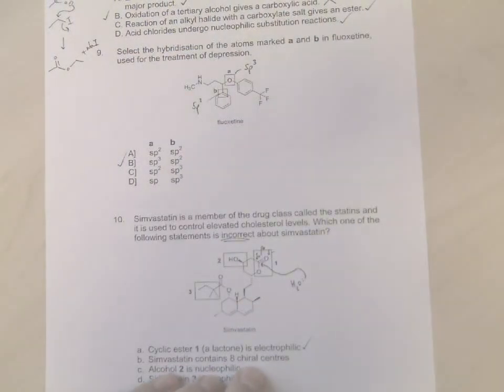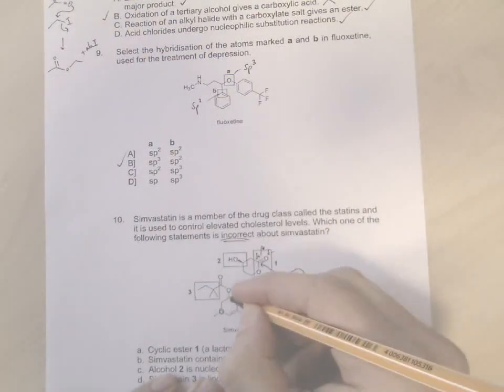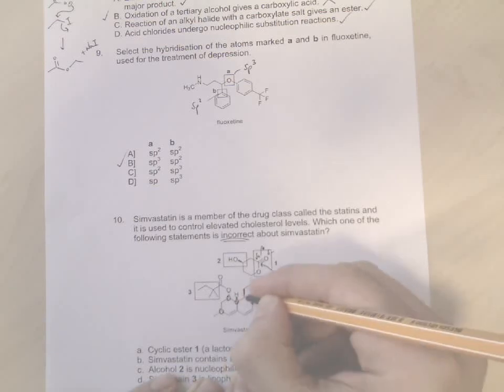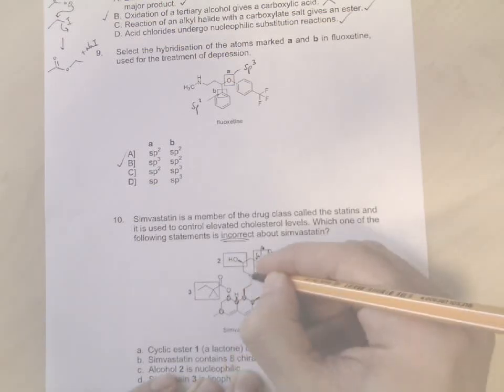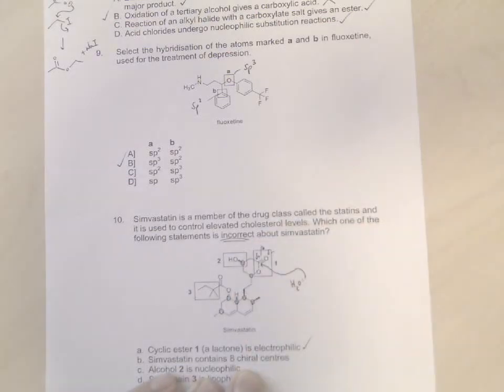Simvastatin contains eight chiral centers. Okay, so again we're looking for groups of carbons with four different groups attached, and again they can be often identified easily by the wedges and the dashes. So here we have one, two, three, four, five, six, seven. Okay, so there's only seven chiral centers there. So it does not contain eight, it contains seven.